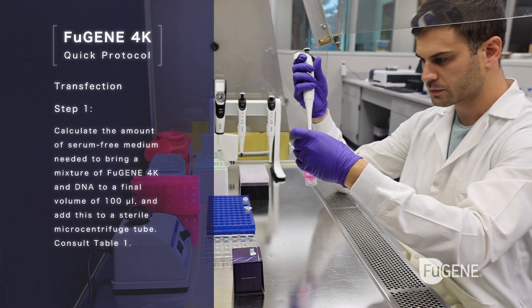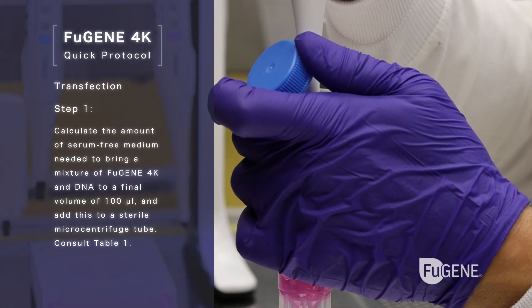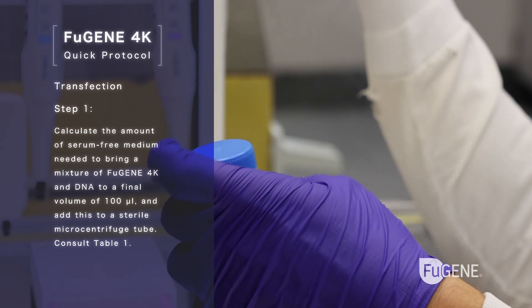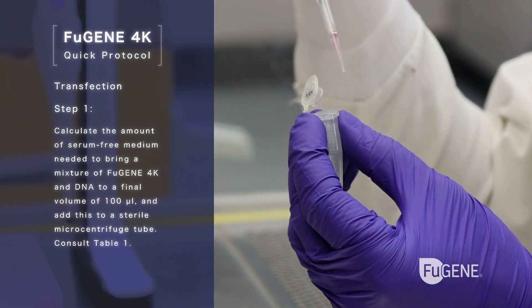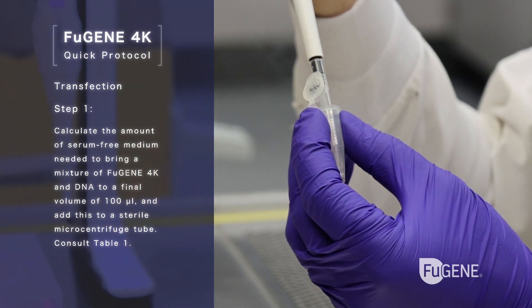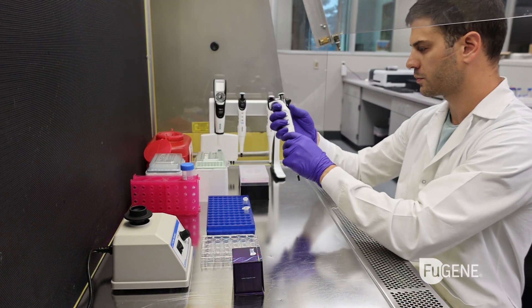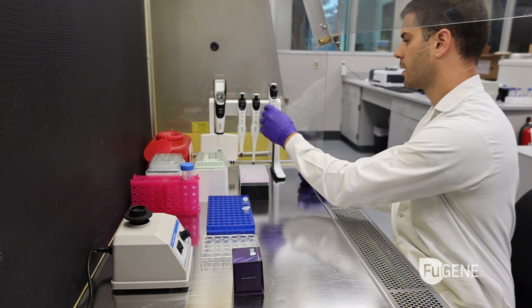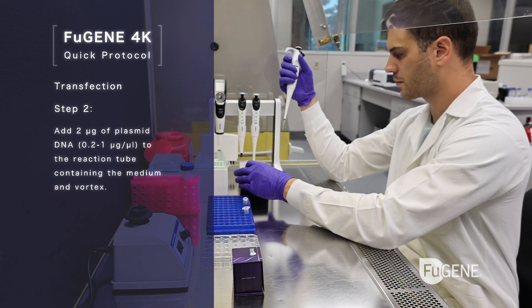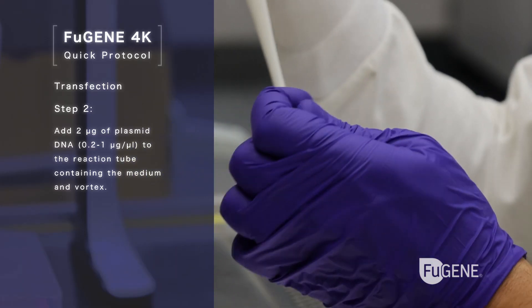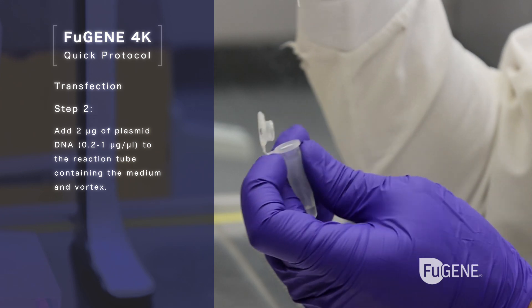Transfection step 1: calculate the amount of serum-free medium needed to bring a mixture of FuGENE 4K and DNA to a final volume of 100 microliters, and add this to a sterile microcentrifuge tube — consult table 1. Step 2: add 2 micrograms of plasmid DNA (0.2 to 1 microgram per microliter) to the reaction tube containing the medium and vortex.